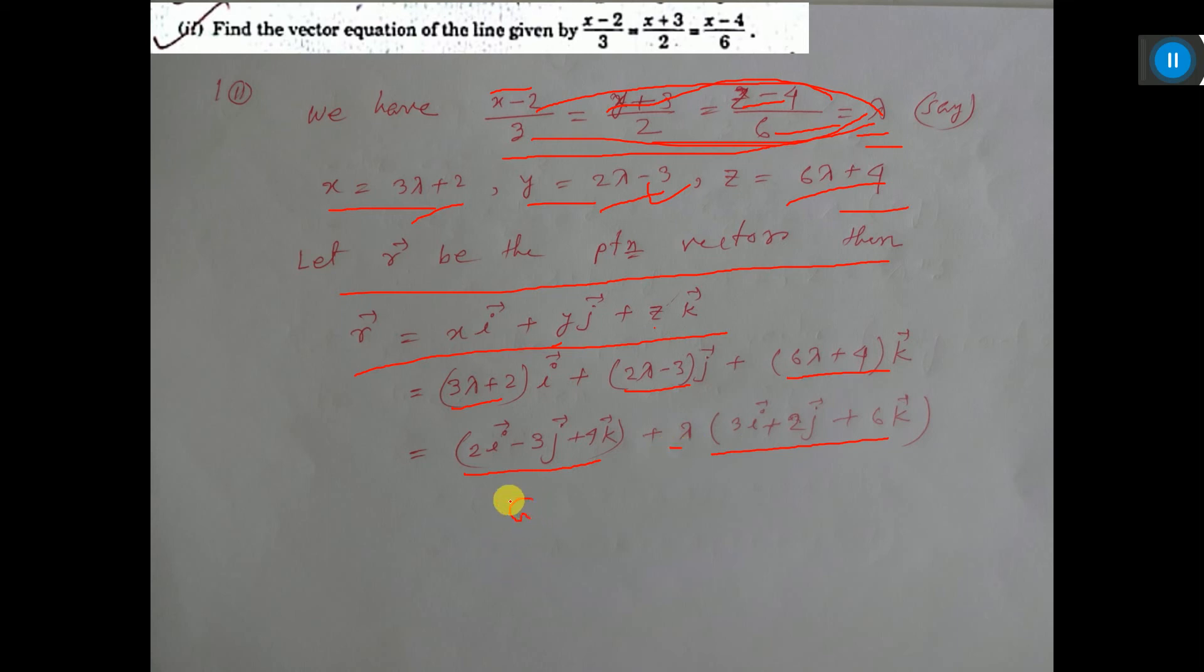So this is the vector a, and this is lambda into this vector, which is vector b. So a plus lambda b is the vector equation. That is, r is equal to...